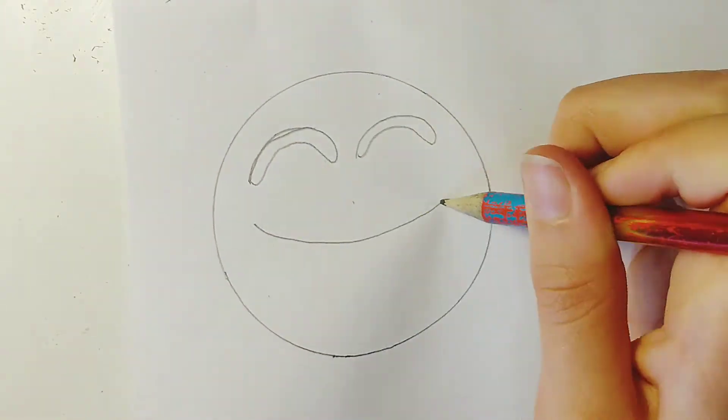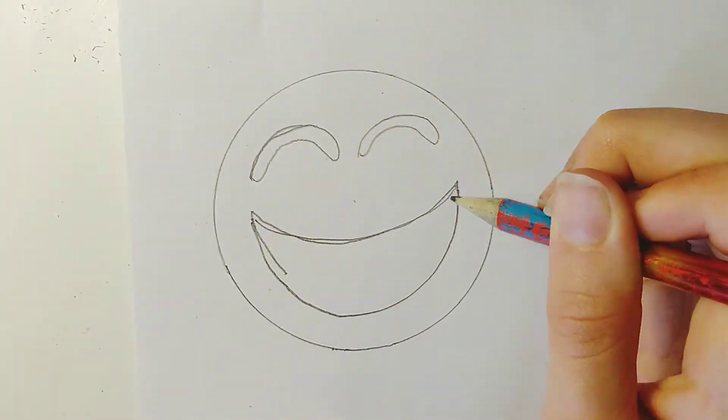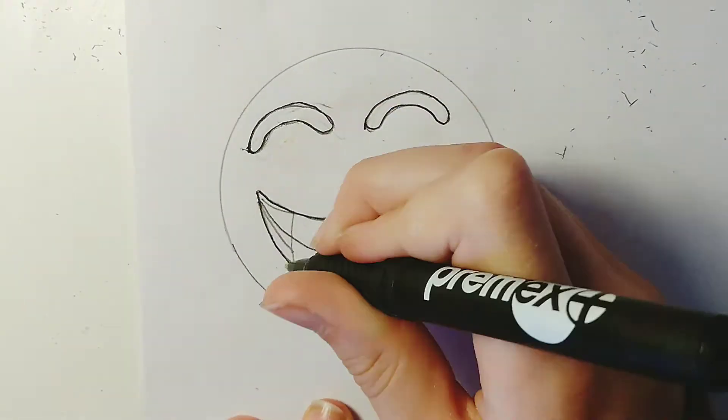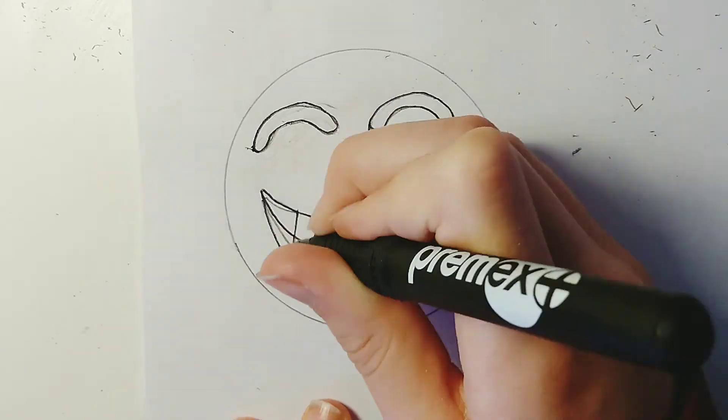So the final one is grinning and you can see its teeth. So we've got the normal curved eyes and just do the teeth with one line across and then other lines crossing it downwards.